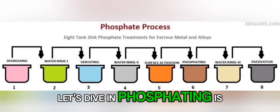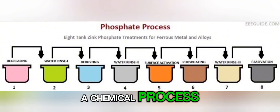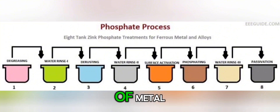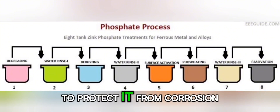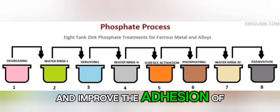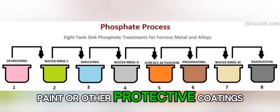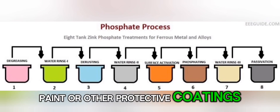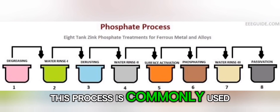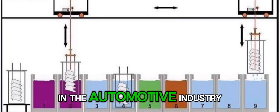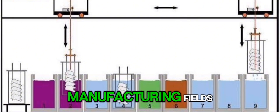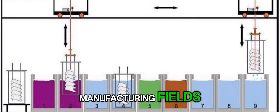Phosphating is a chemical process in which a phosphate layer is applied to the surface of metal to protect it from corrosion and improve the adhesion of paint or other protective coatings. This process is commonly used in the automotive industry, steel industry, and various other manufacturing fields.